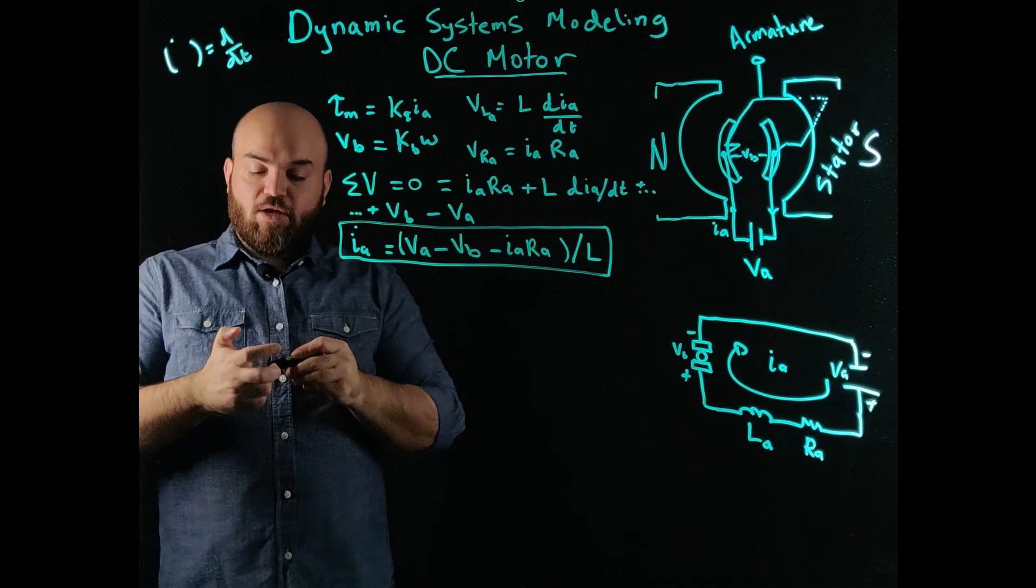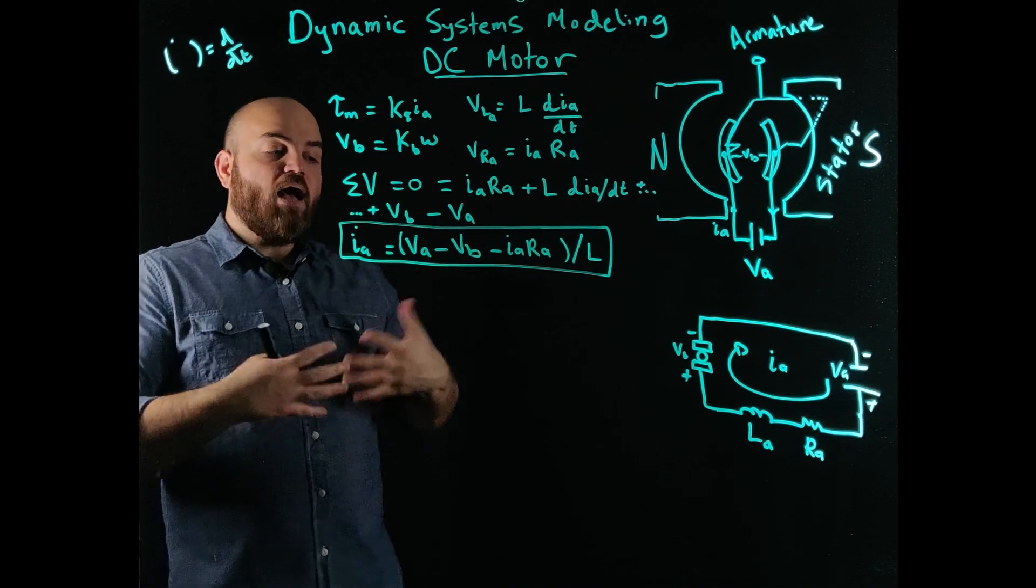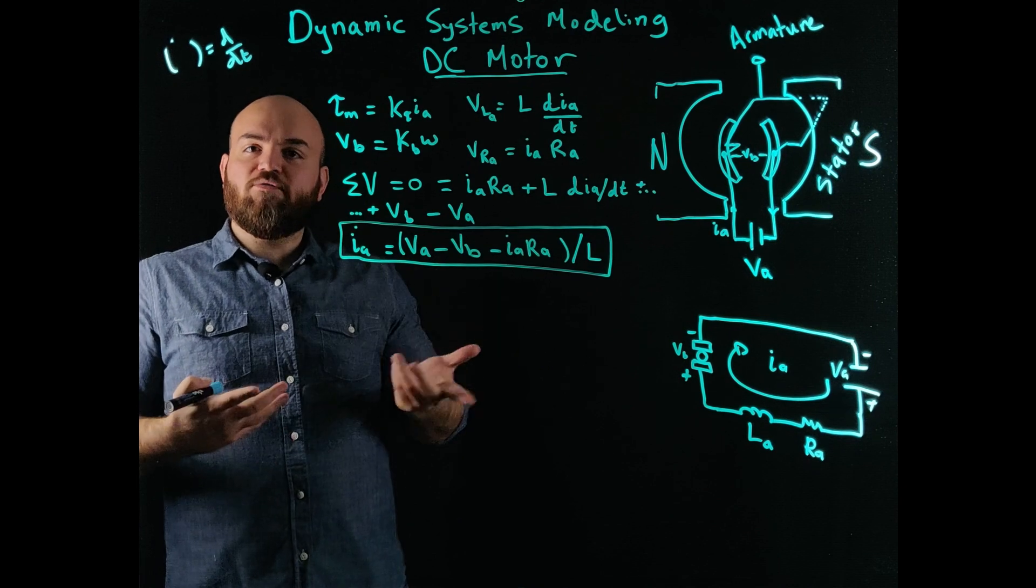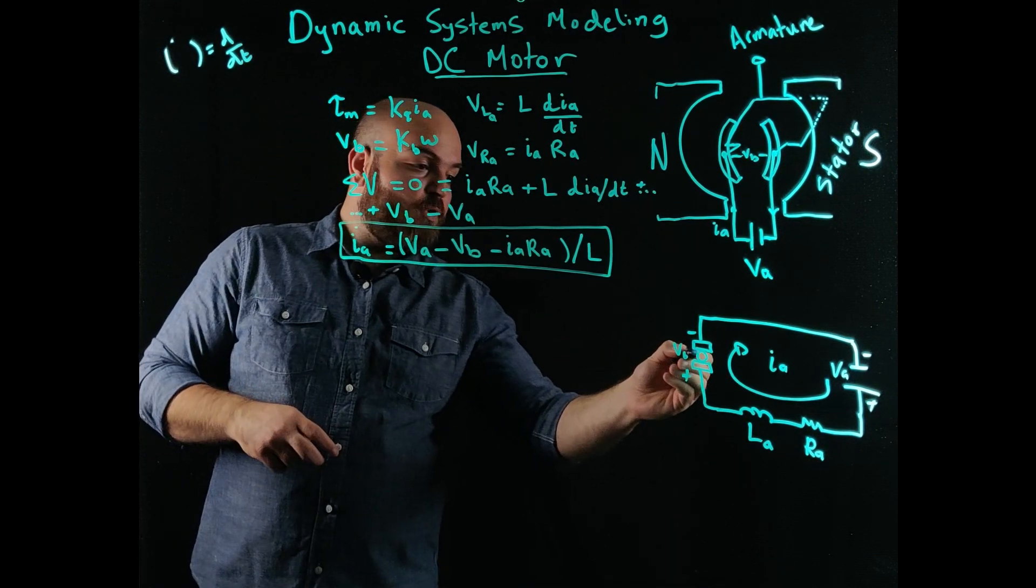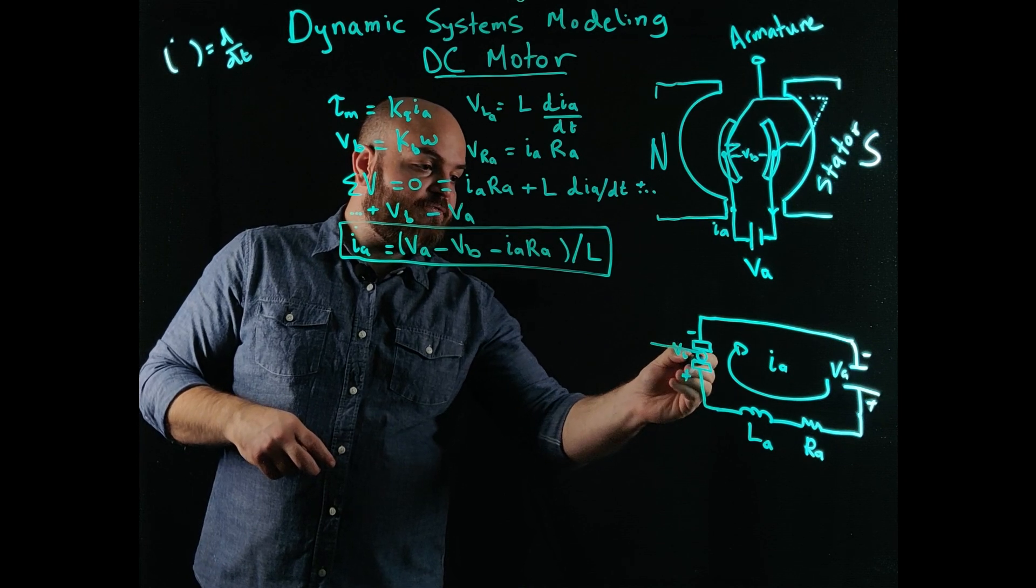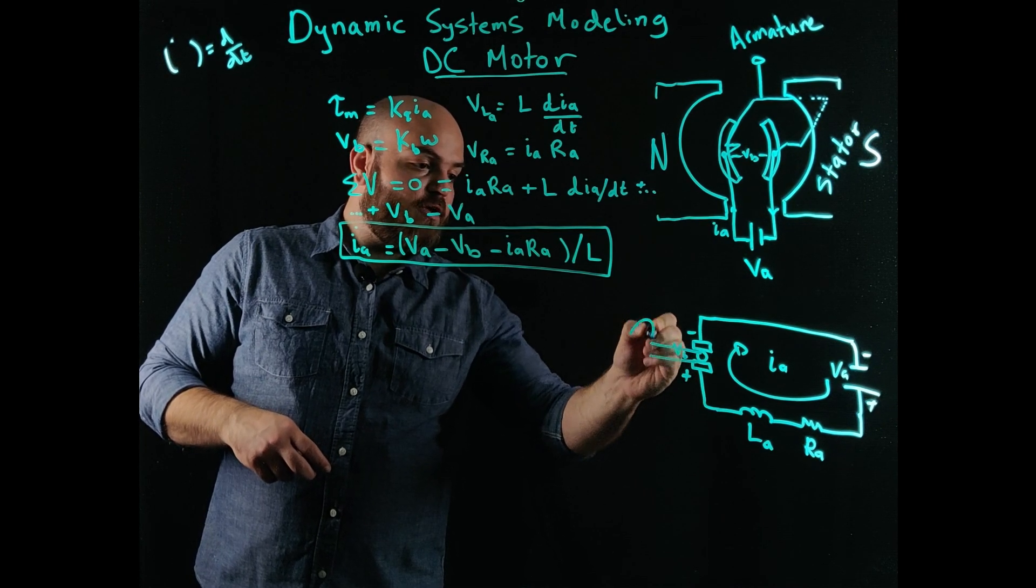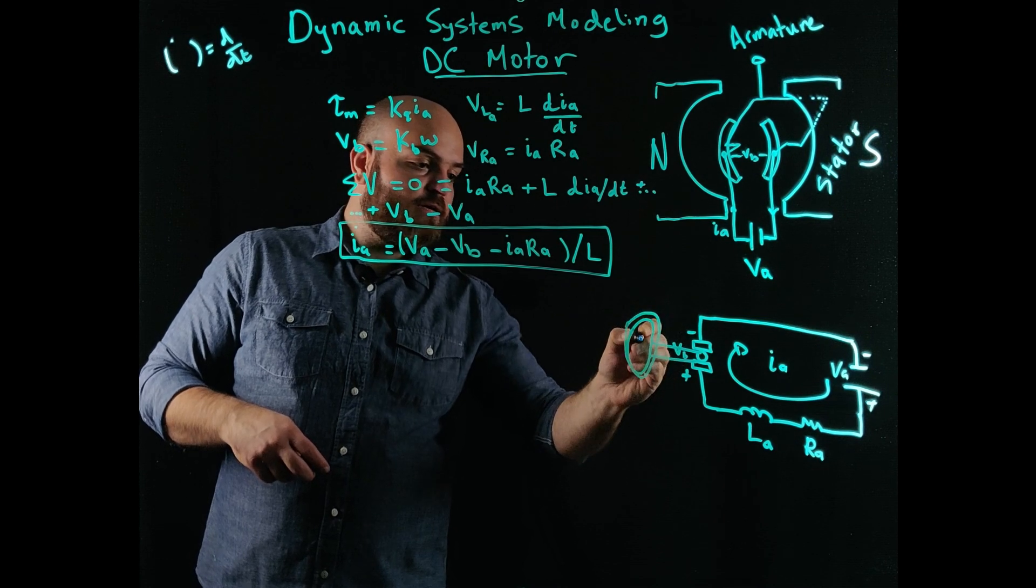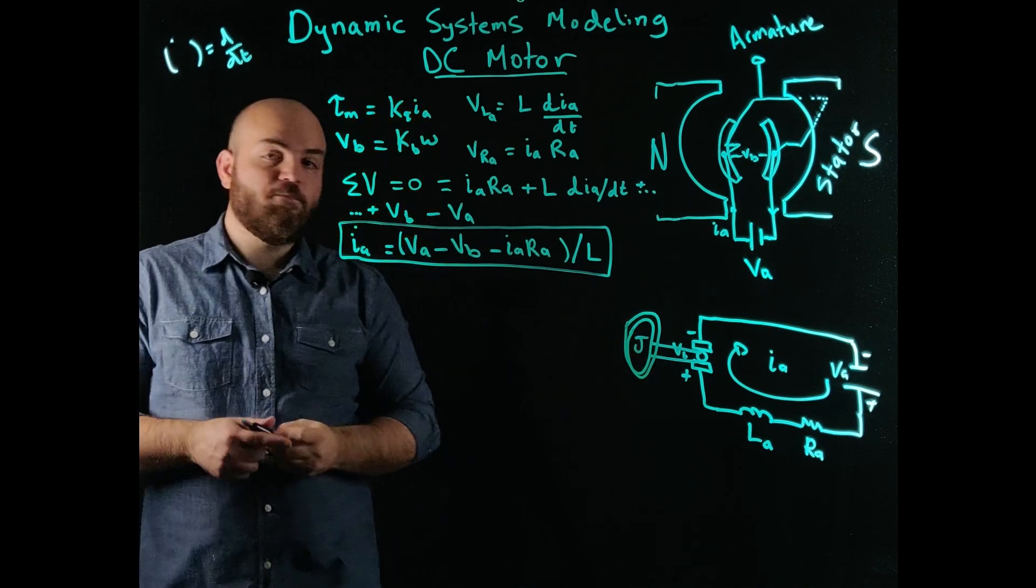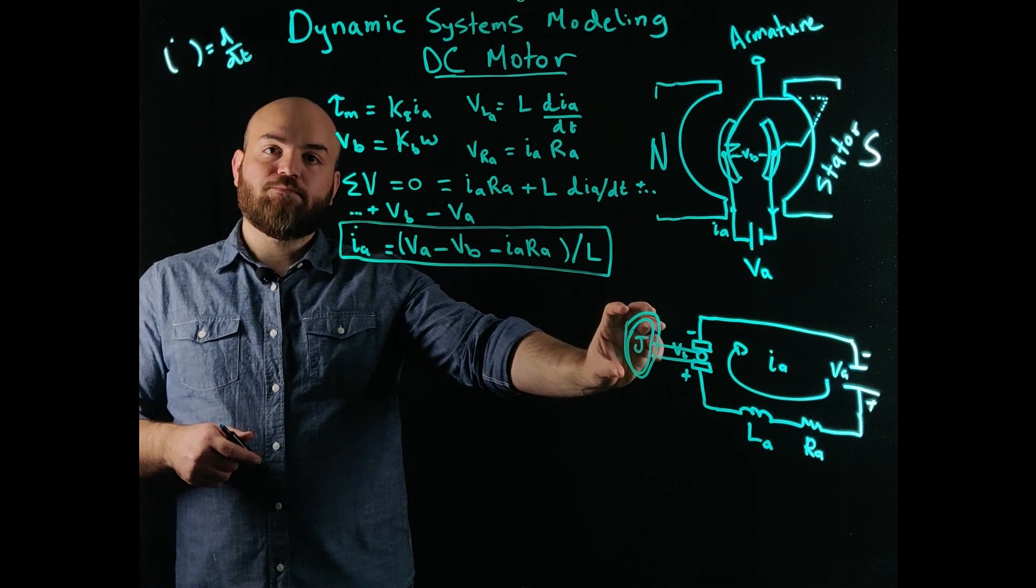We say, okay, great. So I know how the current changes over time. How does that help me with the motion of the motor? That's a fair question. So typically for a motor, we put a shaft here. And then there is something that's like a disc here. I'll call this J for a second. So this is my mechanical load. This is a shaft.